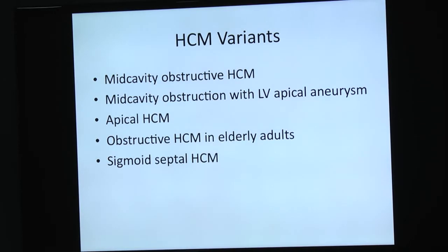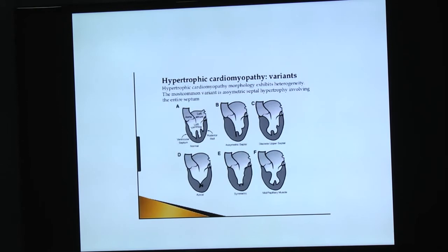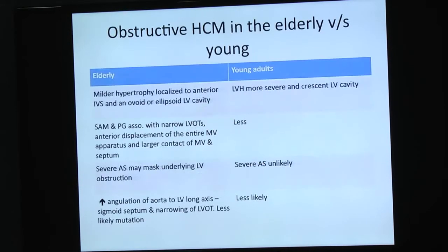There are other variants of HCM including apical, obstructive, and others. There are differences between obstructive HCM in elderly versus young patients. LVH is more severe in the young; however, the prevalence rate and other features are a lot less in younger individuals, and severe aortic stenosis is unlikely in young people.